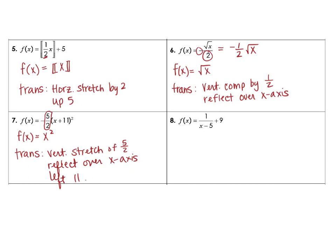Number 8 – our parent function is going to be 1 over x – that's our reciprocal function. And then for our transformations, it looks like we are going to go to the right 5, and then we are going to go up 9.